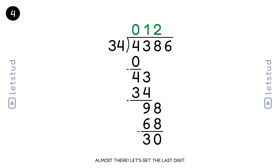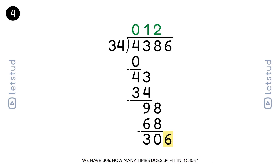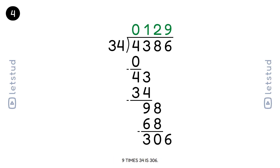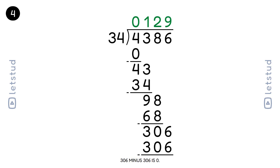Almost there — let's get the last digit. We have a remainder of 30 and bring down the 6 to make 306. 34 fits into 306 nine times. 9 times 34 is 306. 306 minus 306 is 0.